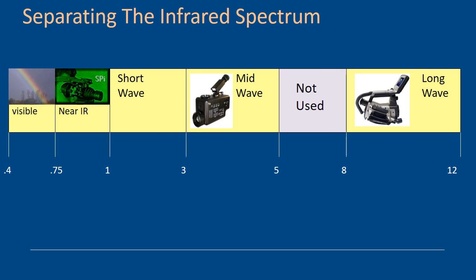Visible light is between 0.4 and 0.75 micrometers. Then we get into the near infrared which goes from 0.75 to 1. Short wave goes between 1 and 3 microns. The mid-wavelength is between 3 and 5 microns — not really used much today, though it was used extensively back in the day. Typical mid-wave cameras now would be things like gas detection cameras which are very specific for a certain job. Between 5 and 8 microns we don't use it — the atmospheric attenuation is such that it really isn't suitable for infrared transmission. The typical infrared camera — 99% of them — works in the long wave of 8 to 12 microns.